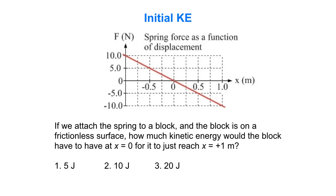So let's say we attach this spring to a block. The block is on a frictionless surface. If we want the block to reach x is 1 meter, starting from x equals 0, how much kinetic energy do we have to give it? 5 joules, 10 joules, 20 joules? What do you think? What does it depend on?